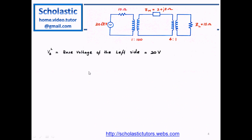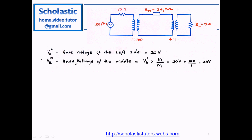What we need to find are the base values of the respective branches. We know the first one: the base value of the left branch is given as 20 volts. To calculate the base voltage of the middle branch, we have to multiply by the turns ratio. This is a step-up transformer, so VBM equals n2 over n1 times VBL.